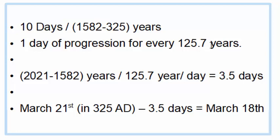In other words, if they're saying the equinox is March the 20th in 2021, and we go 125 years into the future, they should be telling us the equinox is on March the 19th. But when we divide 125.7 years per day from 1582 — when they declared the equinox to be March the 21st — to today, we should have lost three and a half days.